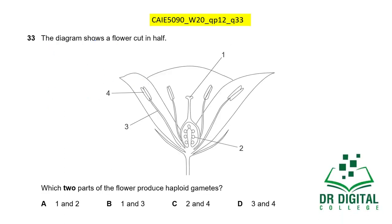In this question, the diagram shows a flower cut in half. Which two parts produce haploid gametes? Haploid gametes are produced by the gonads. The anther (part 4) and the ovule inside the ovary (part 2) produce haploid gametes by meiosis. Part 1 is the stigma and part 3 is the style — these only undergo mitosis and cannot produce haploid gametes. So parts 2 and 4 are the correct answer. Option C is correct.